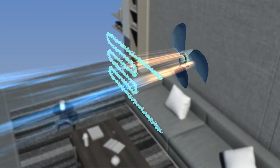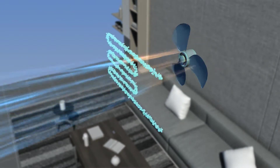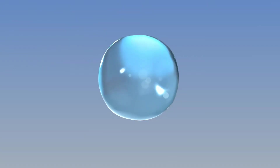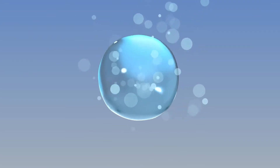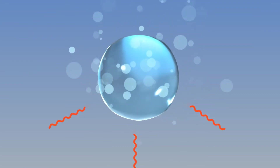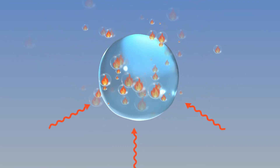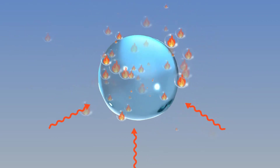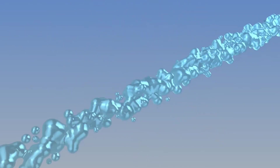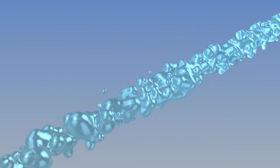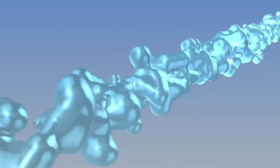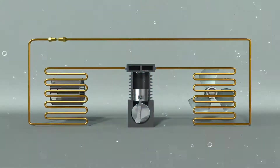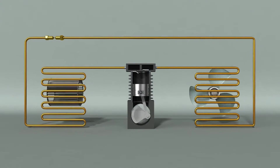air that has lost heat becomes cooler, and a cool breeze comes out from the front. The refrigerant used in an air conditioner tends to evaporate easily and has a high latent heat of vaporization, which makes it perfect for a cooling device.